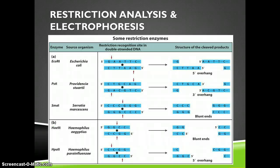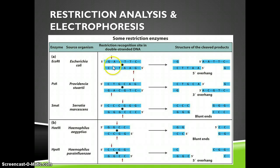There are numerous different kinds of restriction enzymes. EcoR1 comes from E. coli and recognizes the sequence GAATTC, which reads GAATTC in the opposite direction on the other strand. It breaks the covalent bond between the G and the A on both strands. The two sides of the molecule then separate because they're held together by hydrogen bonds, cutting the DNA and giving us pieces with sticky ends.